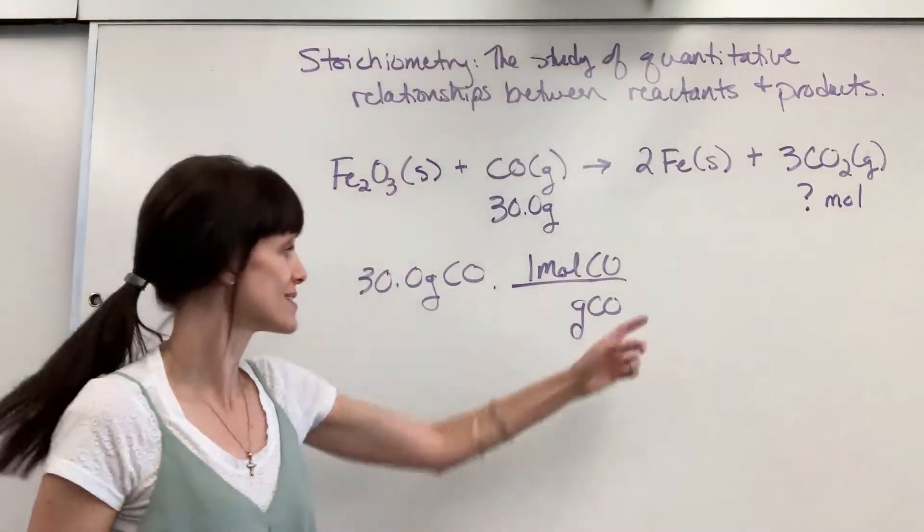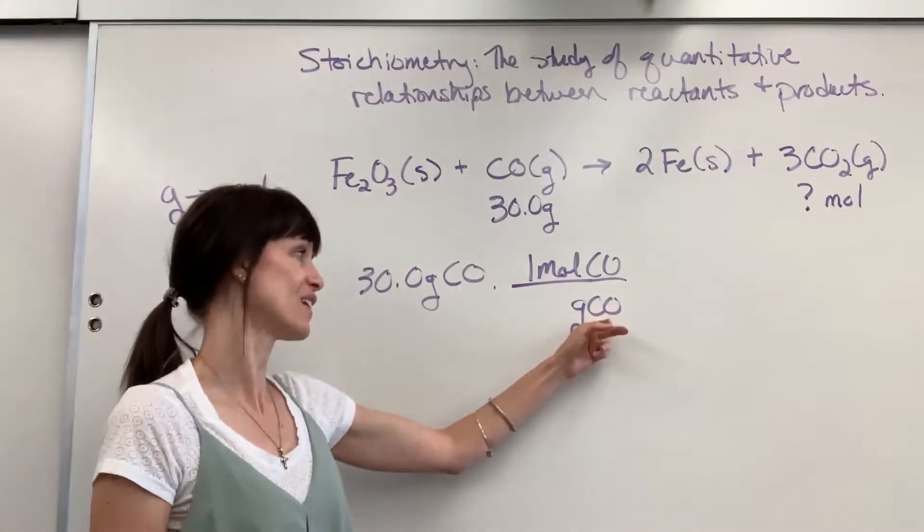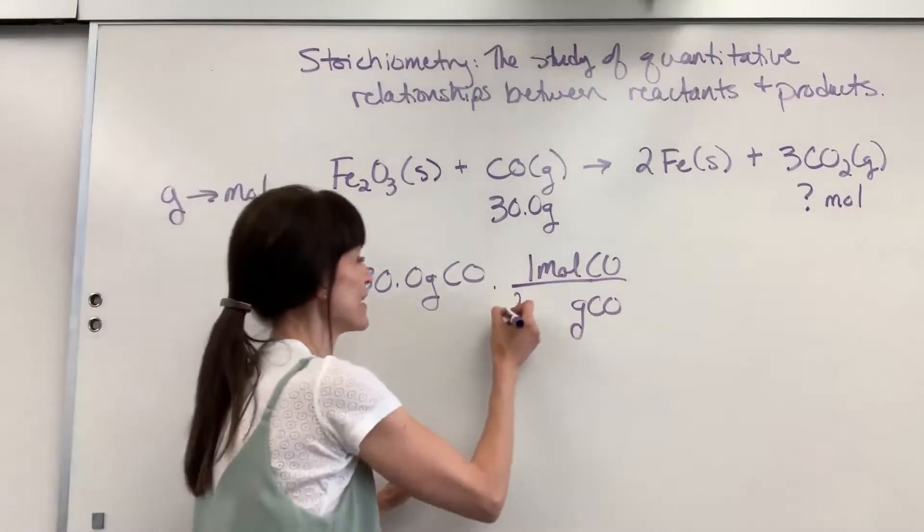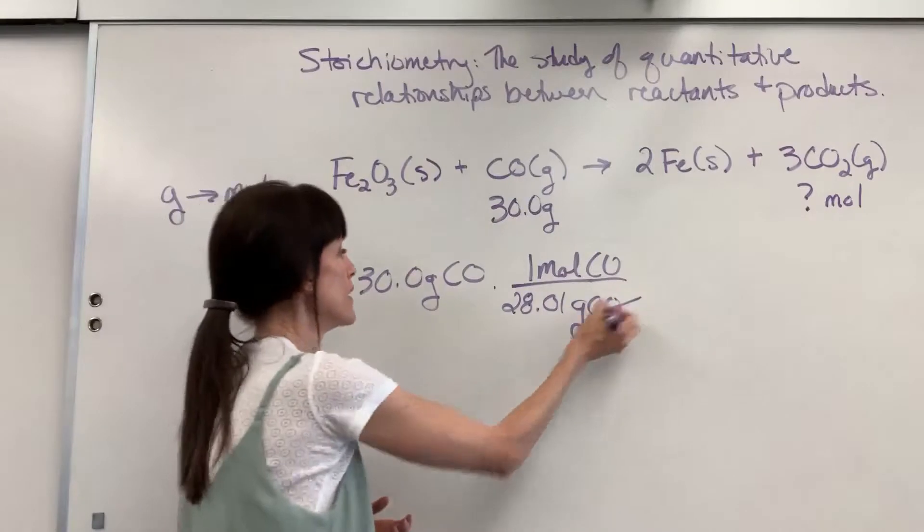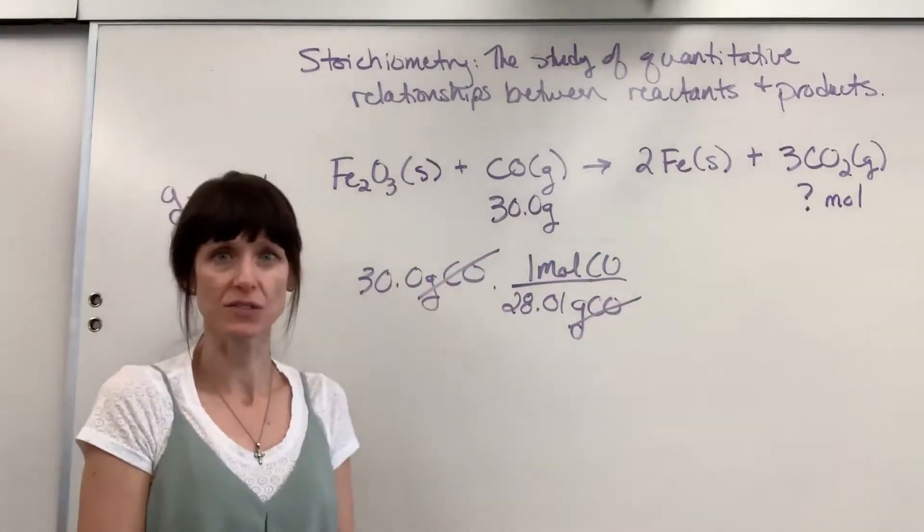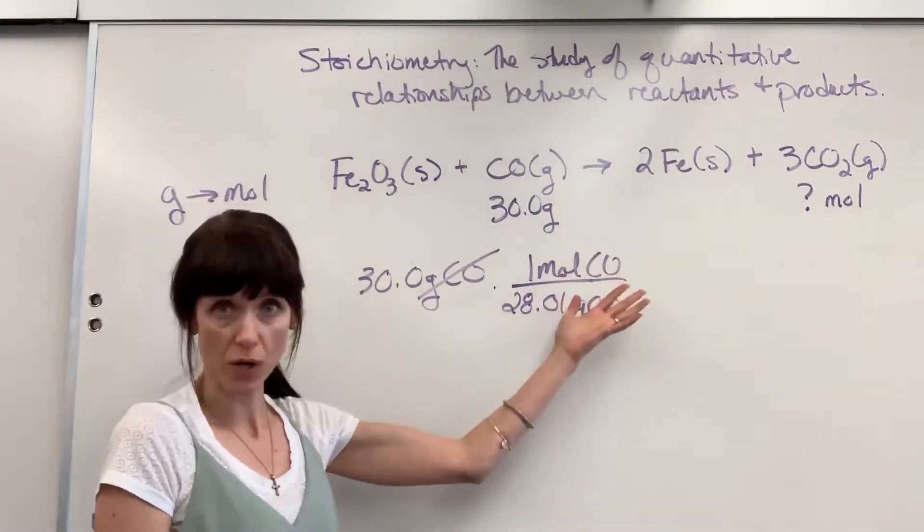So doing the molar mass, oxygen 16, carbon is 12.01, we get 28.01 grams for every one mole of carbon monoxide. Notice grams of carbon monoxide cancels. If I stopped right here, I'd have moles of carbon monoxide.